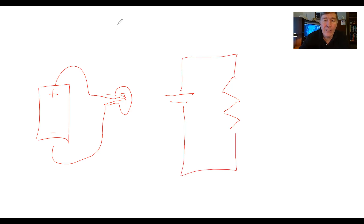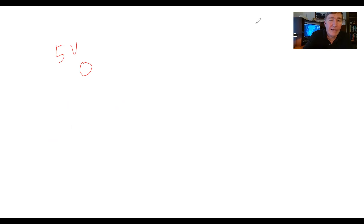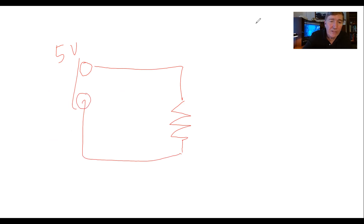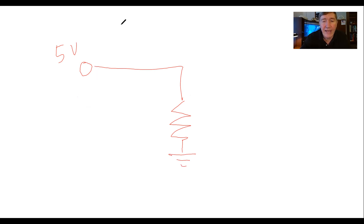This is a symbol you need to get used to. You also need to know that sometimes we simplify it even more. Sometimes we'll have a little dot labeled 'plus five volts,' and then here's the resistor or light bulb or whatever it is. We could draw a line that goes back to the battery, but quite often we don't. Instead, what we do is draw this symbol right here, which stands for ground — another way of saying it's connected to the negative side of the battery.